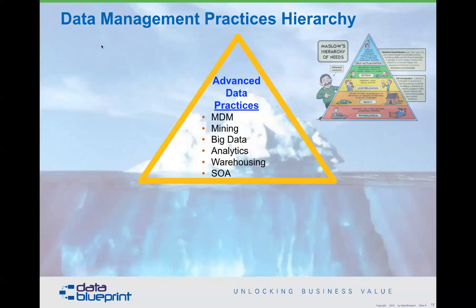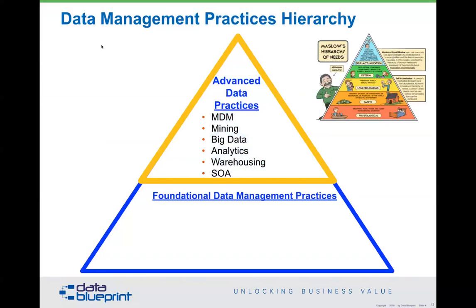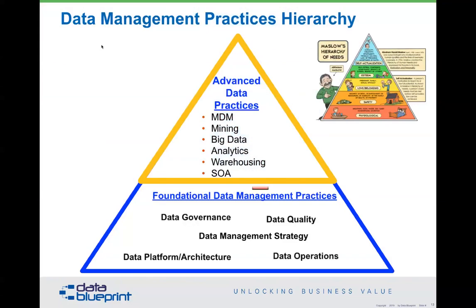This is a tree of necessary but insufficient conditions for moving up the ladder. Data is an awful lot like that, because everything we see advertised in data — master data management, blockchain, and other things — is in the golden triangle at the top. Everybody wants to try those things without understanding there's a lot of foundational practices needed underneath, starting with a strategy that shows you what governance, quality, platform architecture, and operational activities you need. The things in the gold area are technology-focused, whereas the foundational things are capabilities of your organization.